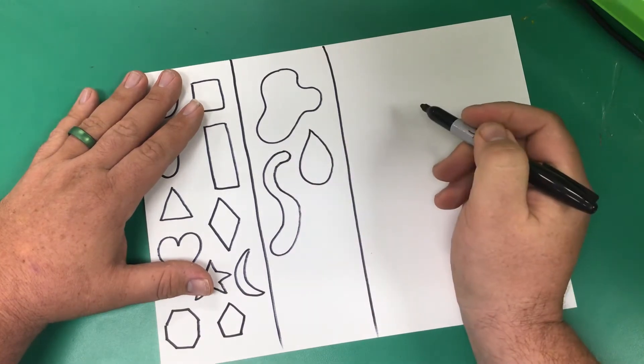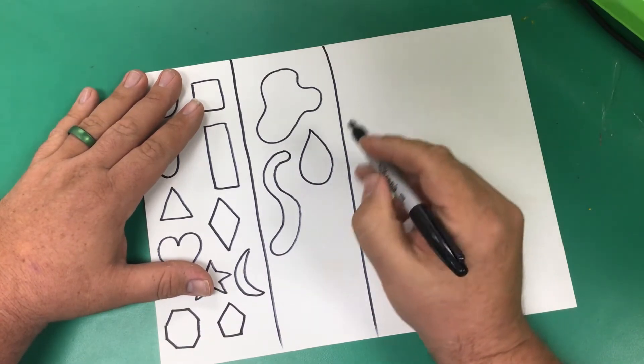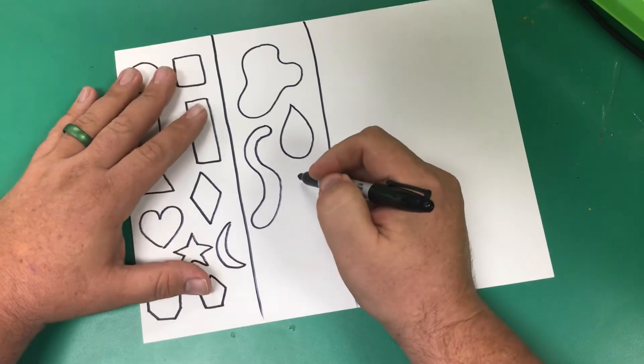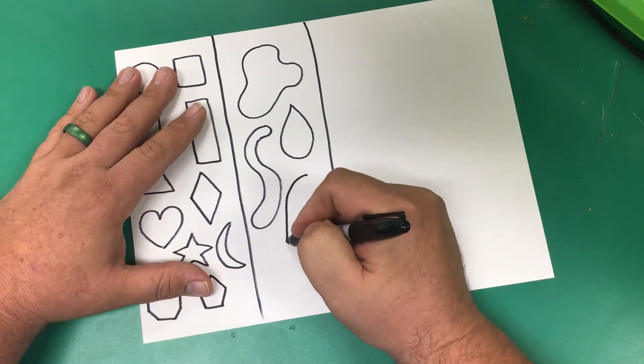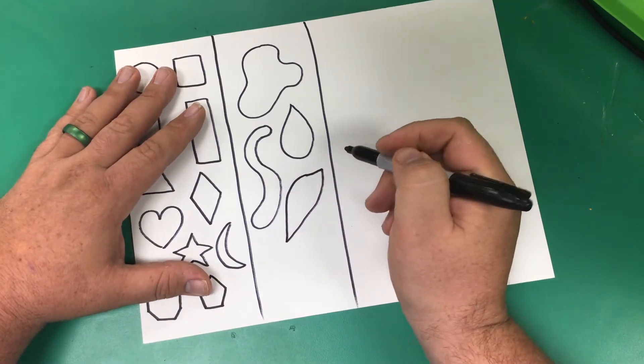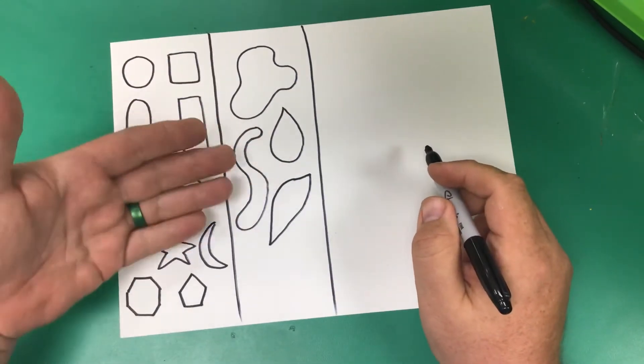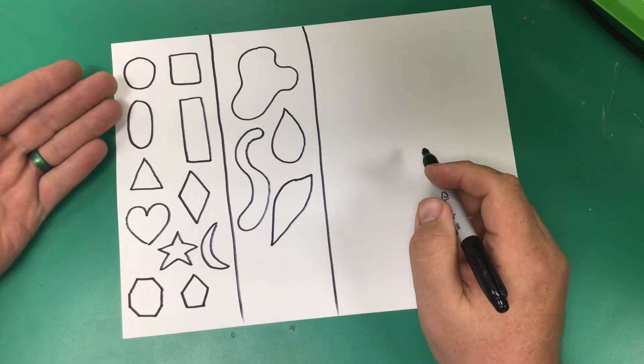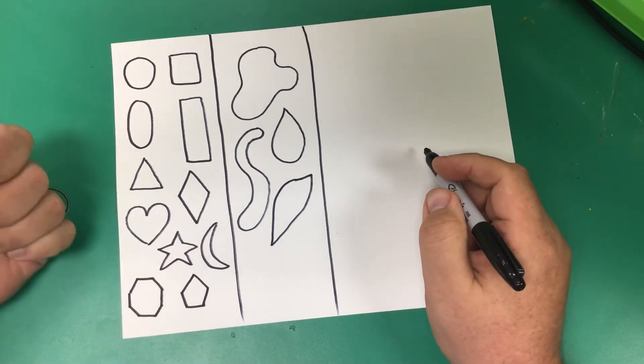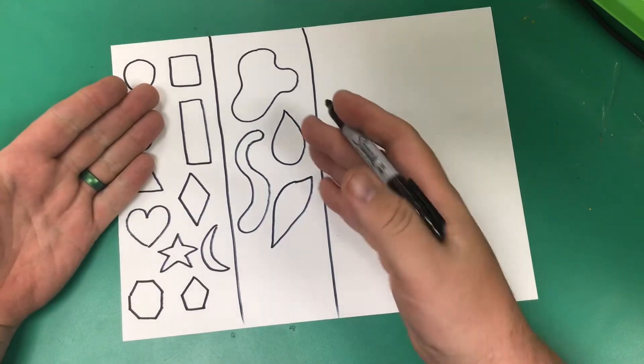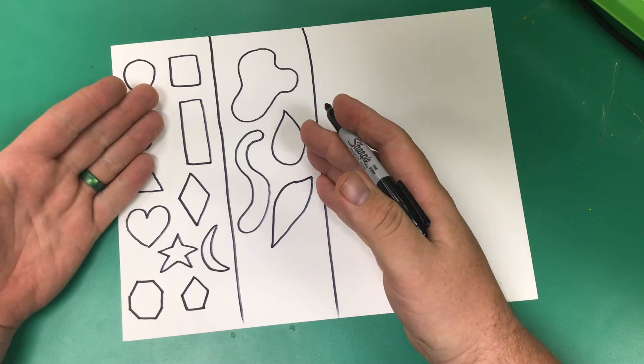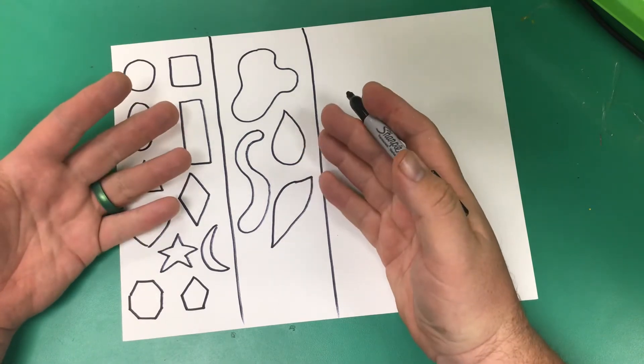Or maybe some of those shapes that we find in nature that don't have a specific name like the geometric shapes. So these are geometric, these are organic.